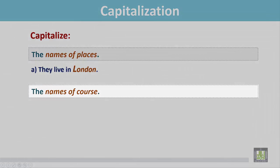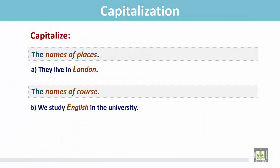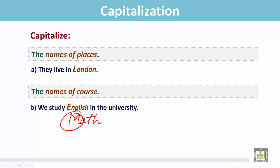The names of courses. We study English in the university. English here is the name of a course and the first letter E is capital. It can also be: we study Math in the university, so the first letter of the course is capital M.